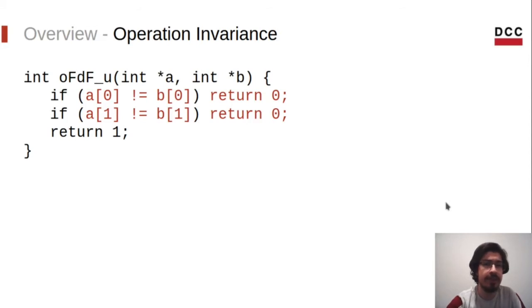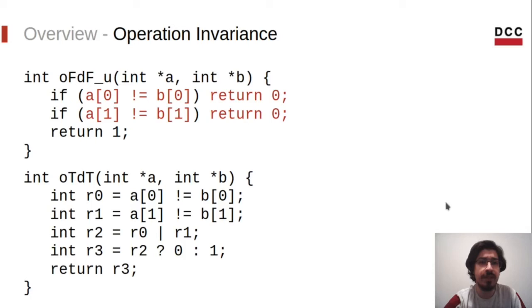Similarly, operation invariance means that this function will always perform the same operations regardless of any input. Here, OFDF_U is basically OFDF but with two iterations of the loop unrolled, just for simplicity. Note, for instance, that the second comparison will only be executed if the first one fails. This is not what we want. We want the function to perform the same operations always. So what can we do? Well, we just need to eliminate the conditional statements. Here is a variation of this function that is operation invariant now - OTDT.